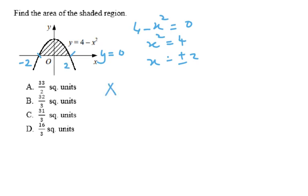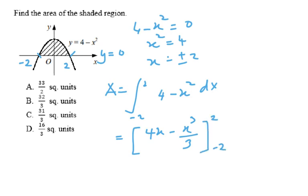So, the area can be found by integrating from negative 2 to 2, the equation 4 minus x squared dx. Integrating the equation gives 4x minus x to the power of 3 over 3, from negative 2 to 2.